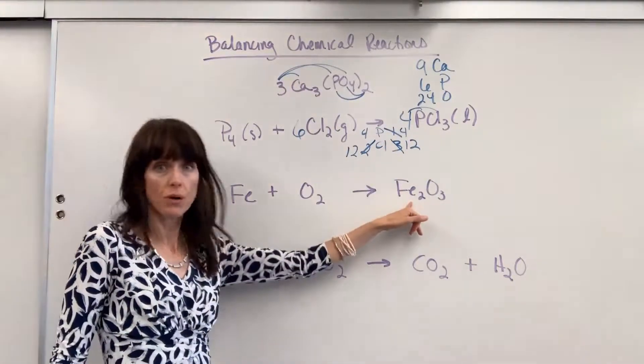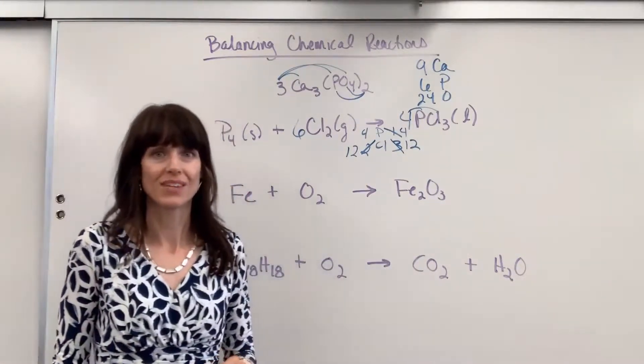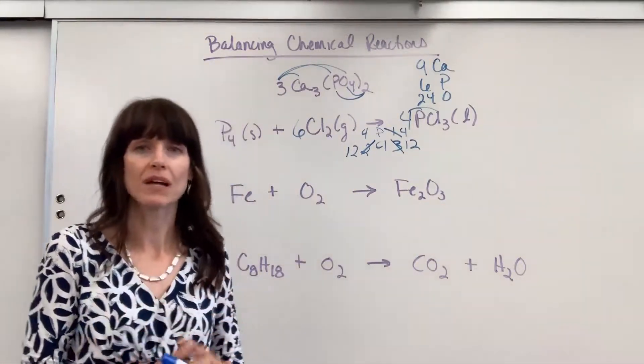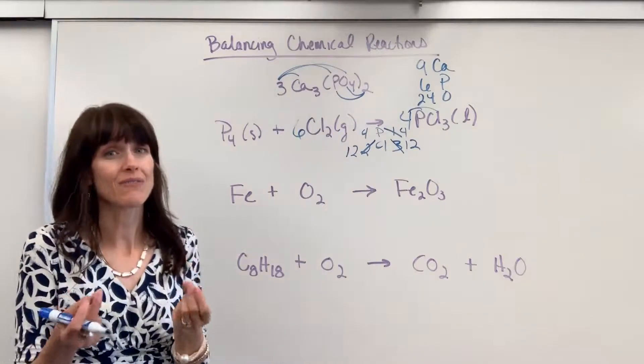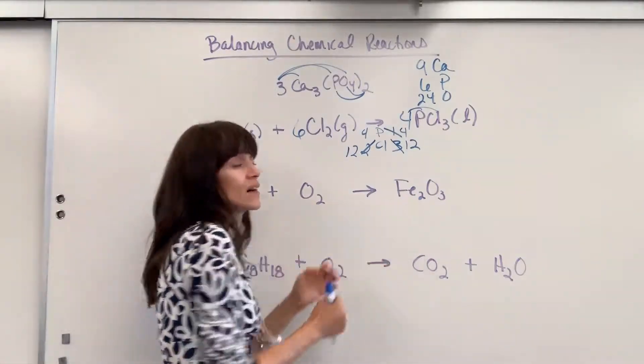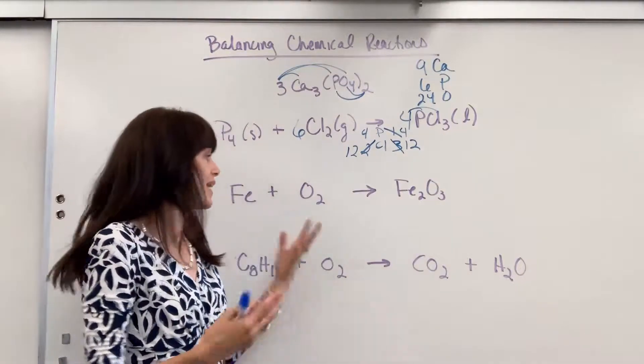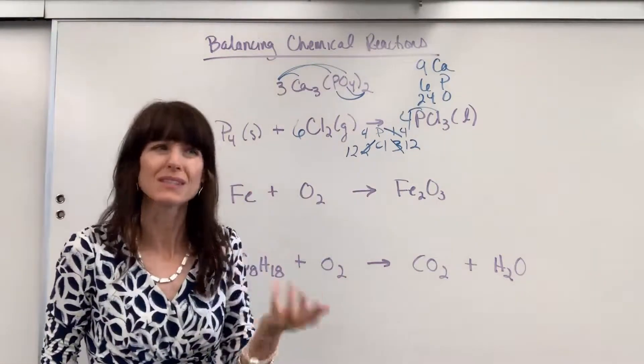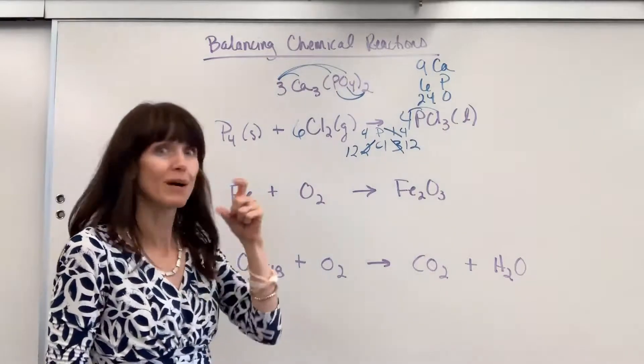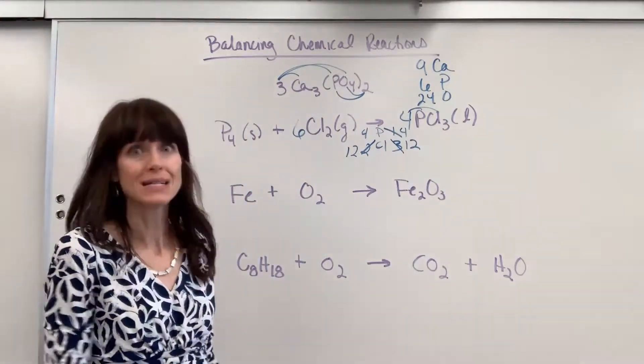So let's first count atoms. One iron, two irons, two oxygen, three oxygen. And I need to have the same number of atoms on each side. What catches my eye very first is I have an even and an odd number. I have to get the same number of oxygens. I know the only way I can do that is the least common multiple. Is that what that's called? The smallest number that they both go into? Six.